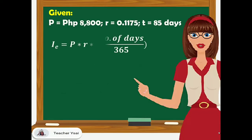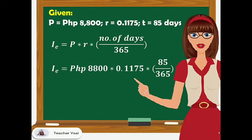Now to solve for the exact interest, we have the formula P times R times number of days over 365. Substituting the given, we have 8,800 for the principal amount times R which is 0.1175 times the number of days which is 85 over 365. Simplifying this equation, we have our exact interest equal to 240 pesos and 79 centavos.